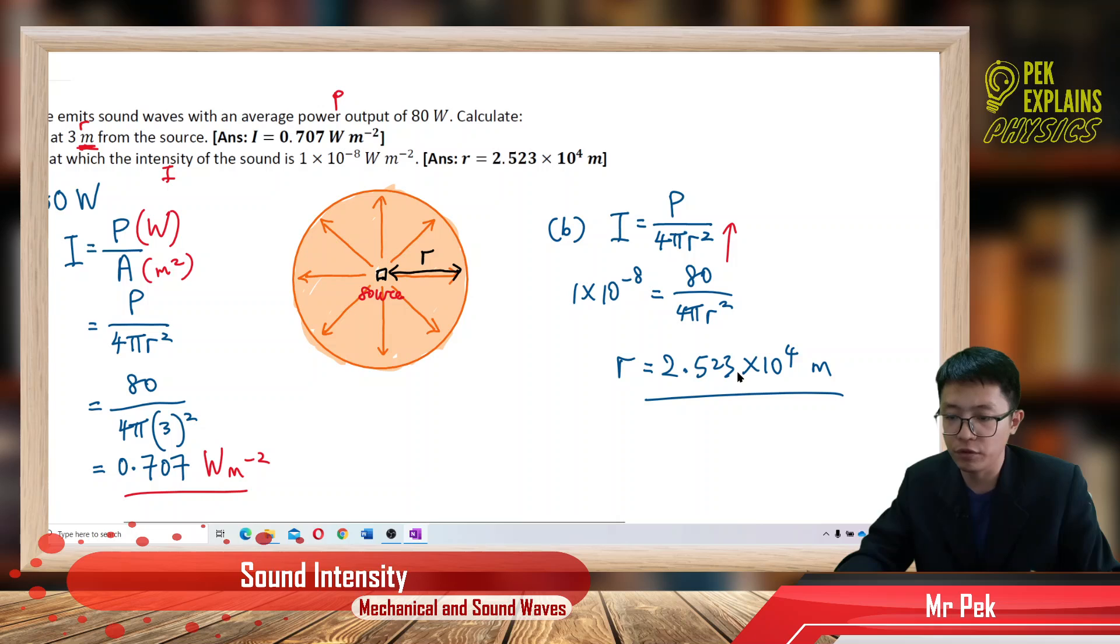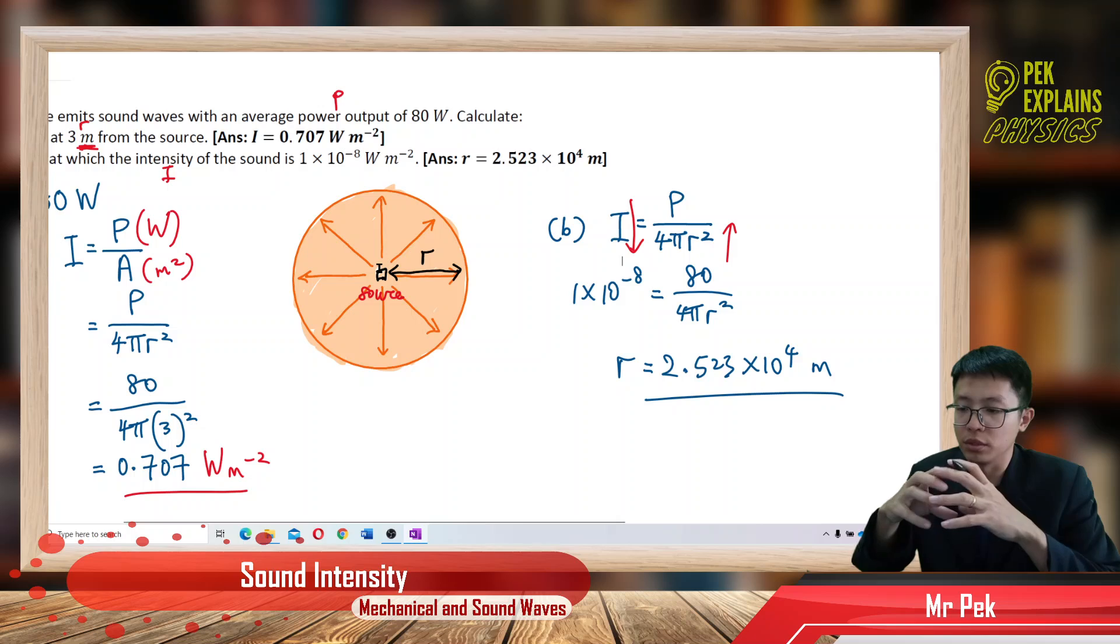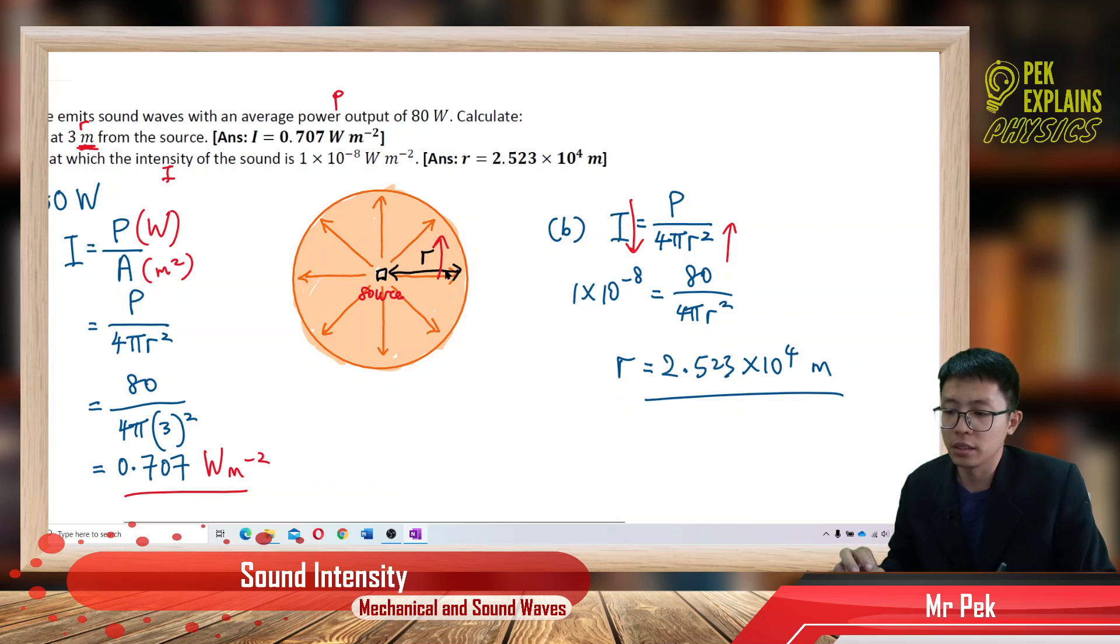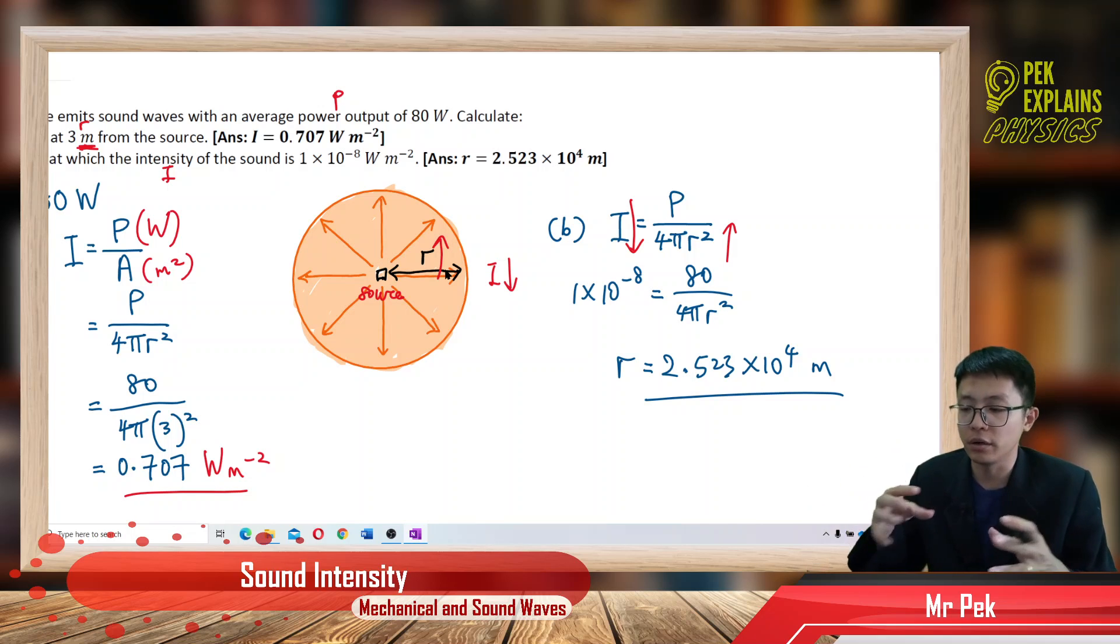The further from the source, the lower the intensity. That's because the sound distributed to a sphere area. The sphere become bigger and bigger. So, the further the distance, of course, the intensity become lower. Because the energy already distributed to a very, very big sphere or big area.